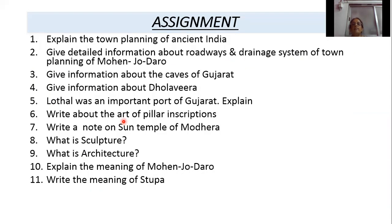This lesson is completed. I have given some questions as an assignment, with answers provided point-wise. Write down the questions and answers in your history notebook. The questions are: explain the town planning of ancient India; give detailed information about the roadways and drainage system of Mohenjo-daro; give information about the case of Gujarat; give information about Dholavira; explain Lothal as an important port of Gujarat; write about the art of pillar inscription; write a note on the Sun Temple of Modhera; Bati's culture; Bati's architecture; explain the meaning of Mohenjo-daro; and explain the meaning of a stupa.